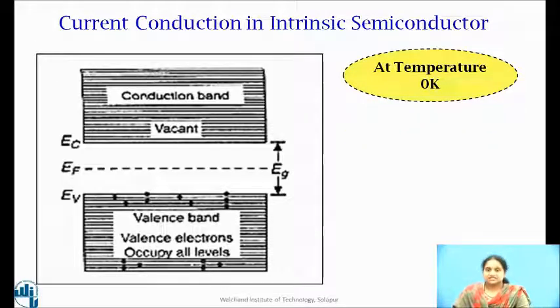This is the corresponding energy band diagram. There are no electrons left to go into the conduction band. At 0 Kelvin, electrons in the valence band do not possess enough energy to jump into the conduction band.